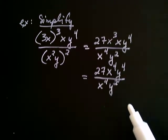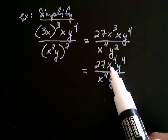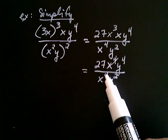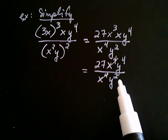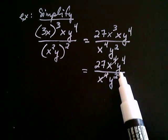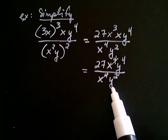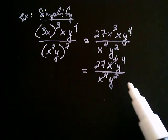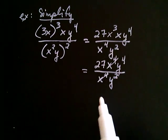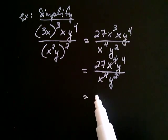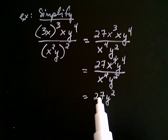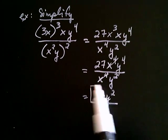Now with 27 x to the fourth y to the fourth over x to the fourth y squared, the x to the fourths cancel completely. For y to the fourth over y squared, same base so we subtract exponents: 4 minus 2 equals 2, giving y squared. So the final answer is 27y squared — the expression is completely simplified.